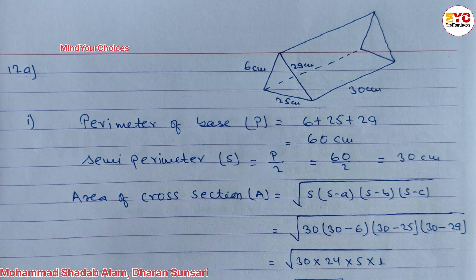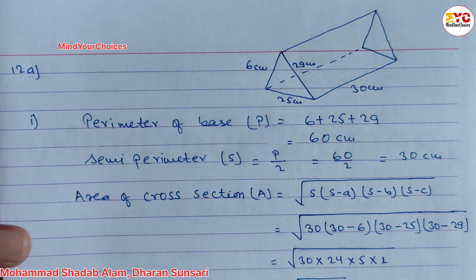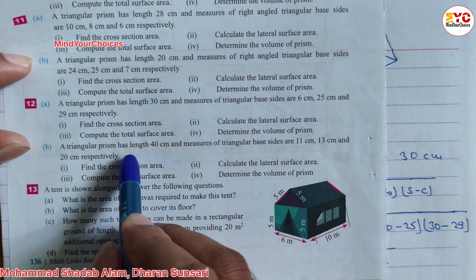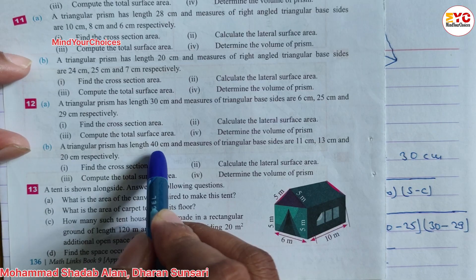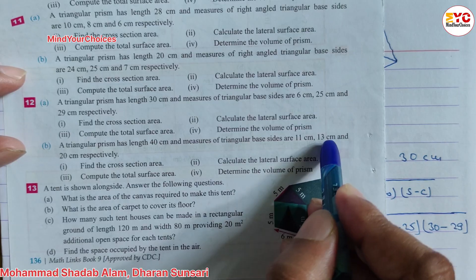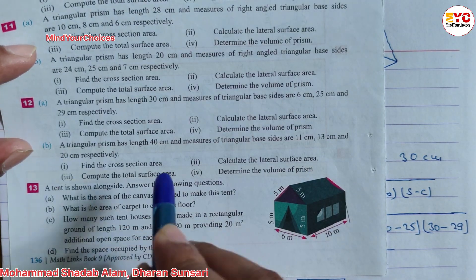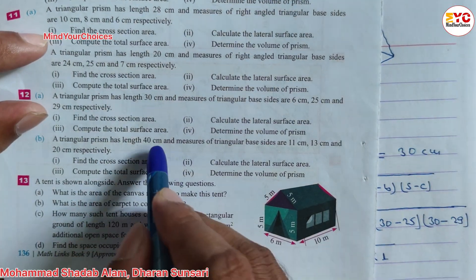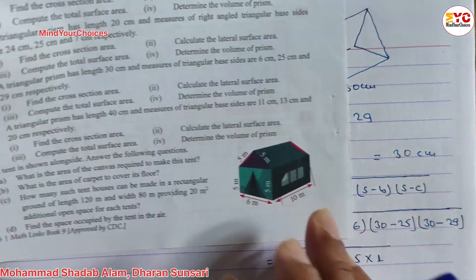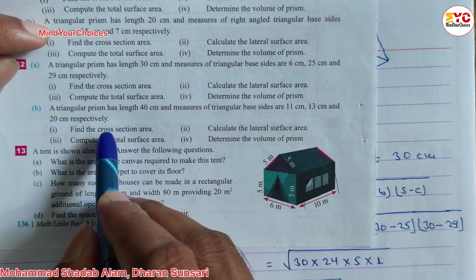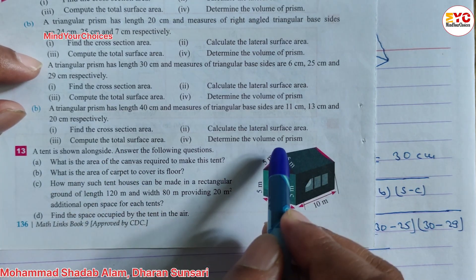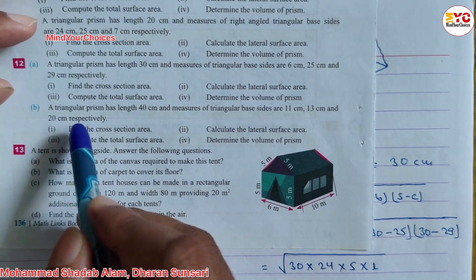This was for the scalene triangle — none of the sides are equal. Now you can see question number 12B: a triangular prism with length 40 cm and base sides 11 cm, 13 cm, and 20 cm. Find the cross-section area, lateral surface area, total surface area, and volume.